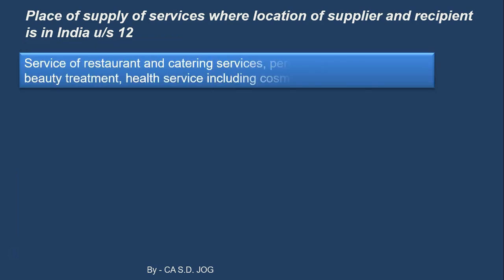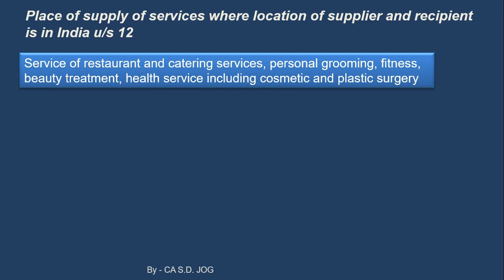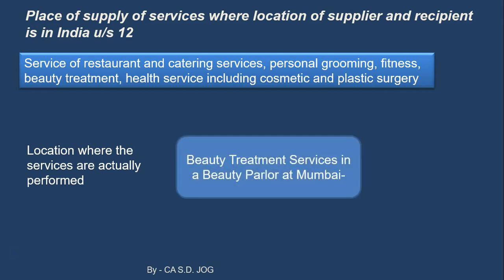The next case covers services of restaurant or catering, personal grooming, fitness, beauty treatment, health services, including cosmetic or plastic surgery. The common factor in all these services is performance — where you are actually performing the activity. For catering at a particular place, grooming, fitness, or health treatment, the location where services are actually performed will become the place of supply. For example, a beauty treatment taken in a beauty parlor at Mumbai — the services are performed in Mumbai, so the place of supply is Mumbai.